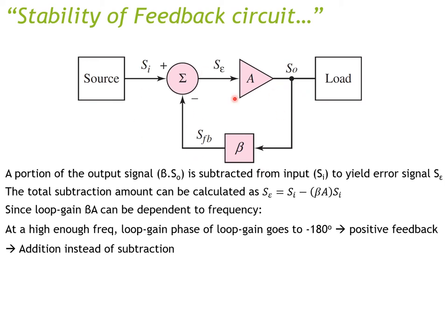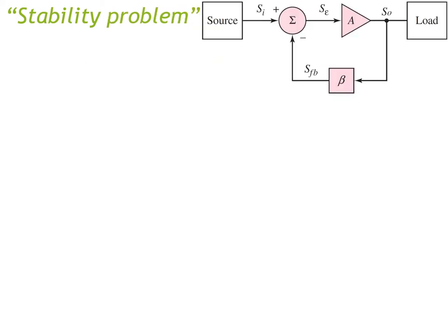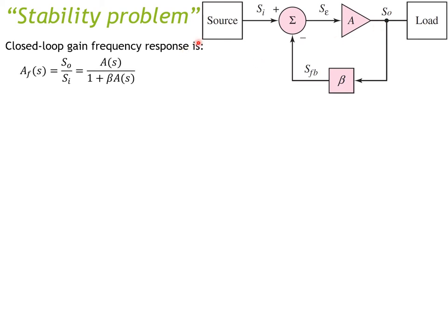If you keep going through this loop you basically break the stability of your system — you have an unstable system. To evaluate the stability problem, we use the feedback system diagram where the input source goes through the feedback loop to generate an error signal, which is amplified to provide the output. The closed-loop gain frequency response can be shown as A_f(s).